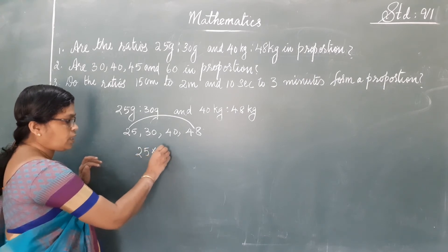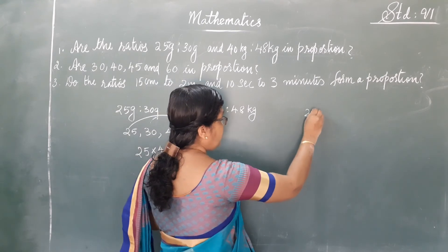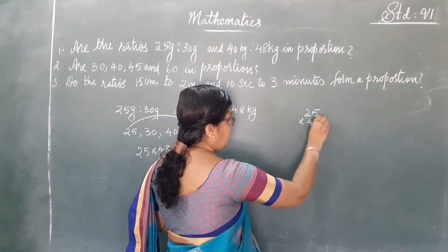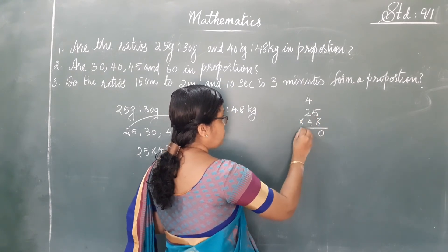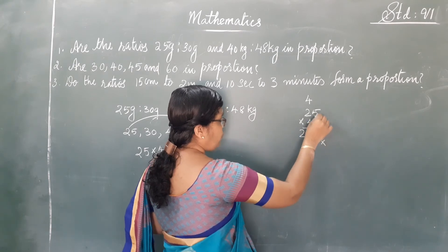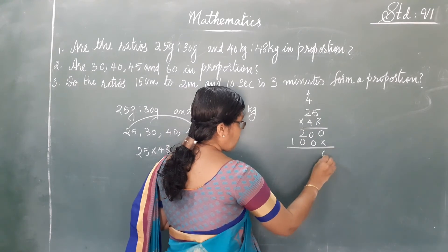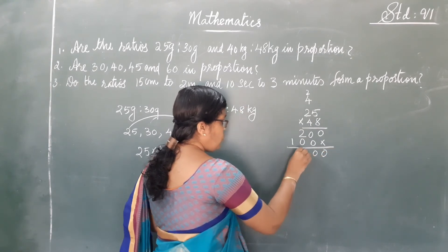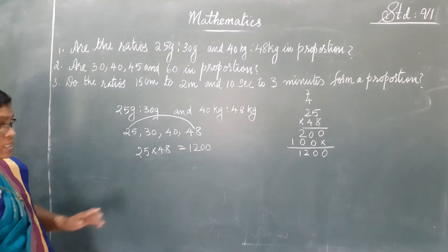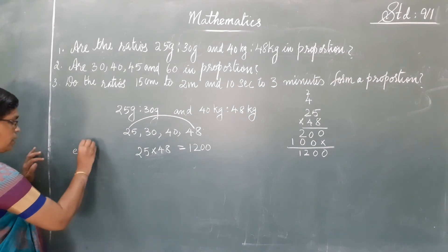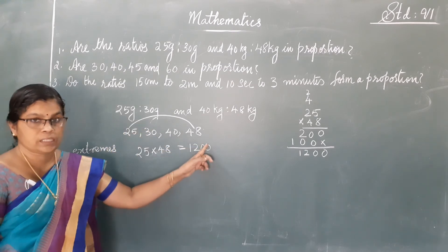25 into 48 equals 1200. These are called extremes — 25 and 48. Then we have to multiply the middle quantities, which are 30 and 40.